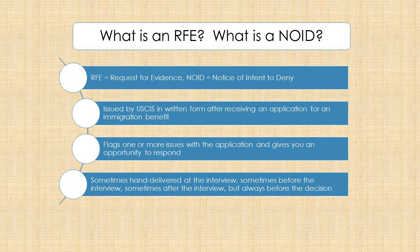Let's start with the basics. An RFE is a request for evidence and a NOID is a notice of intent to deny. Both are issued by USCIS in writing after receiving and considering an application for an immigration benefit. They flag one or sometimes more than one issue with the application and then provide you with an opportunity to respond by a set deadline. Sometimes the RFE or NOID is hand-delivered at an interview, but you might receive one before or after that, really any time before USCIS issues their decision.